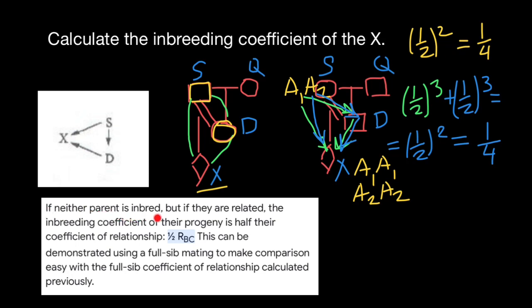Take a look at this statement. If neither parent is inbred, and as you see this parent is not inbred, this parent is also not inbred. It is a daughter of individual S but daughter is not inbred. She has mother and father who are not related. If neither parent is inbred but if they are related, and of course they are related, father and daughter, they are parents of individual X.